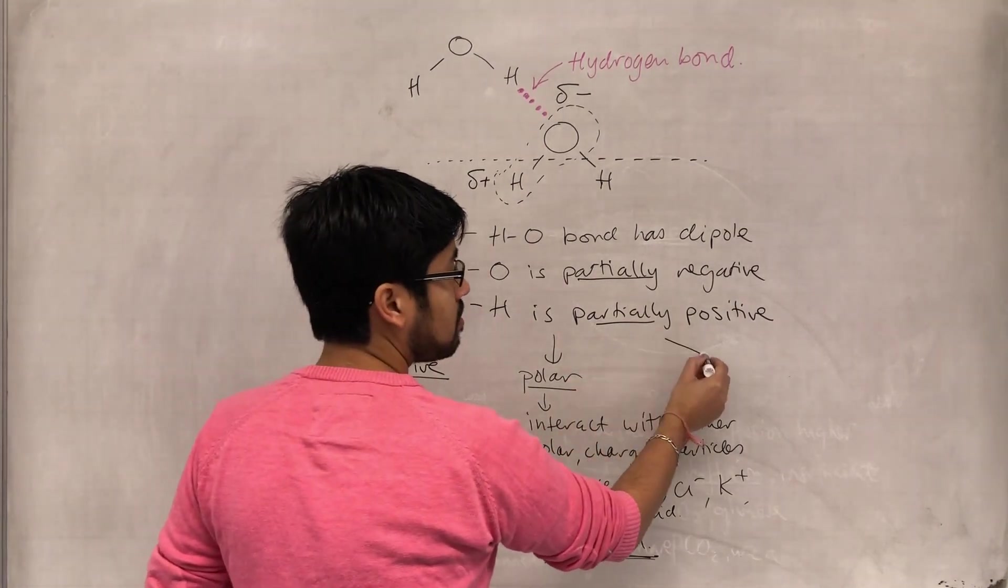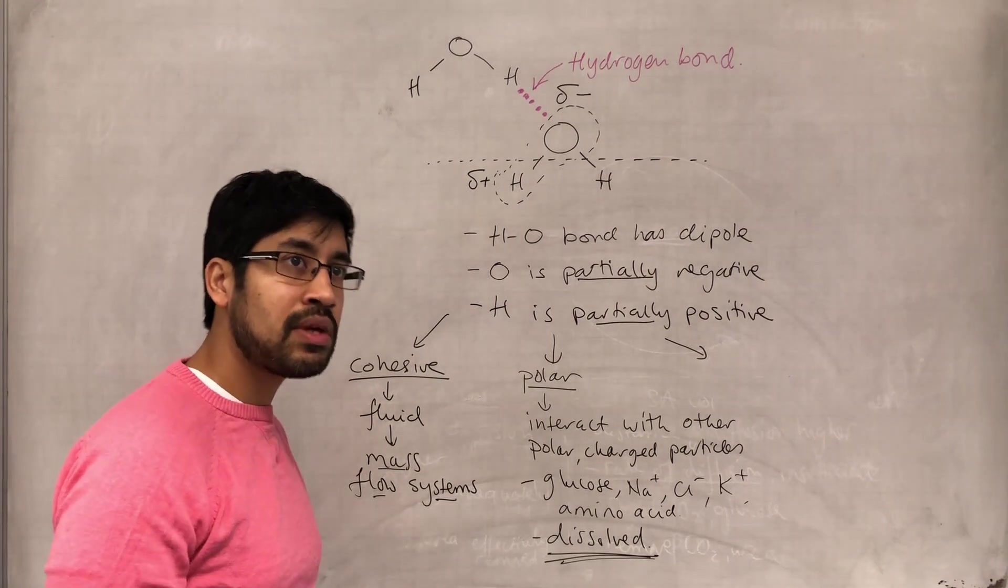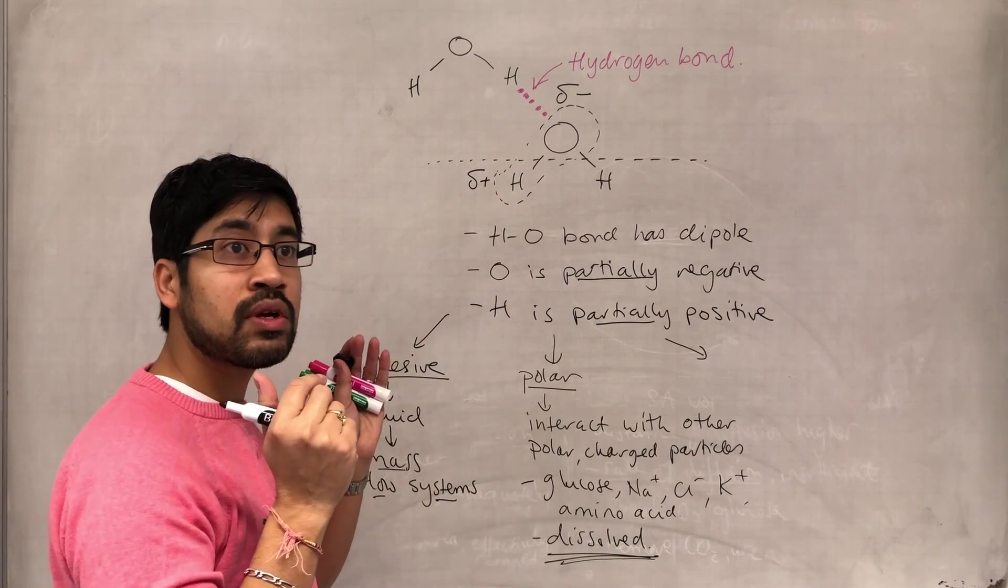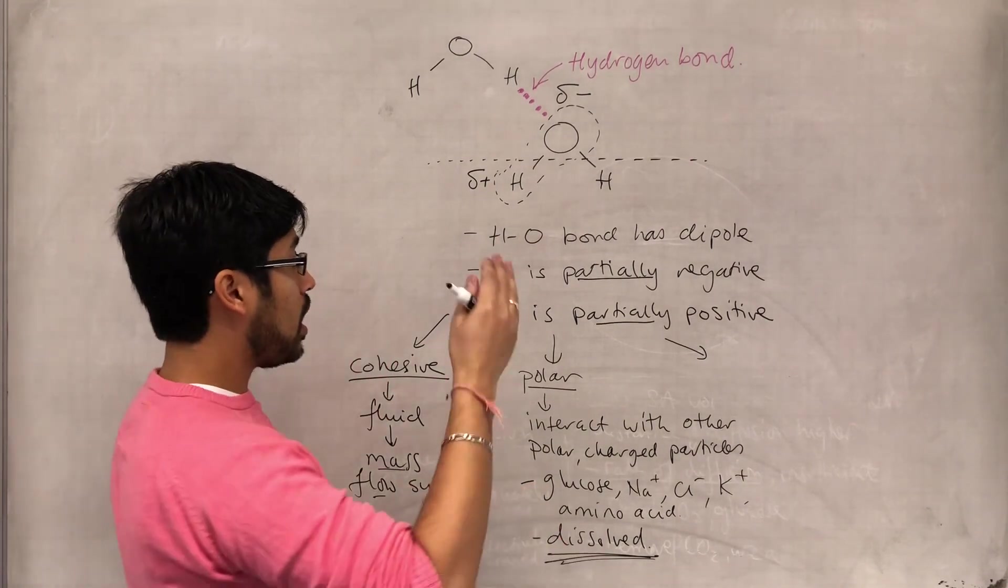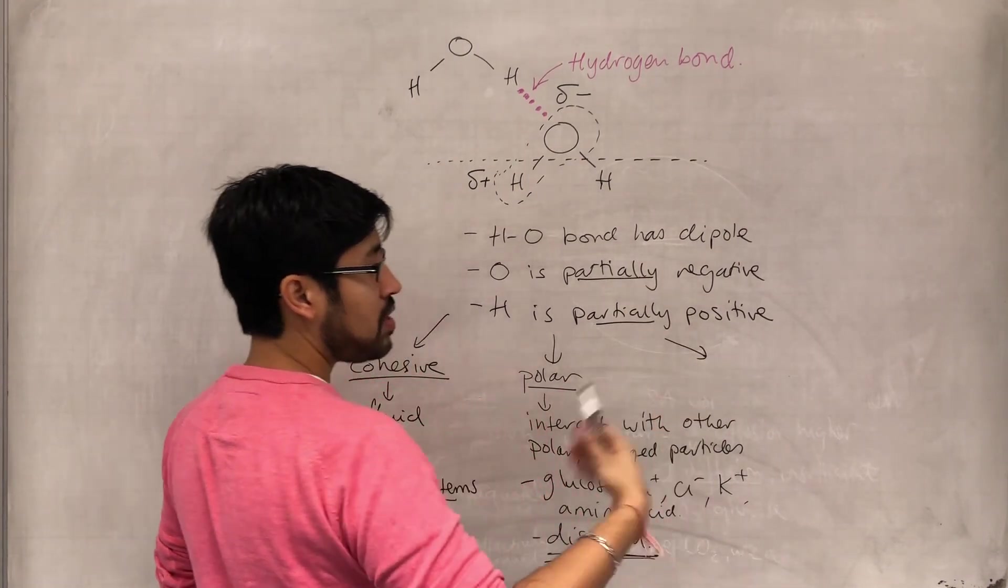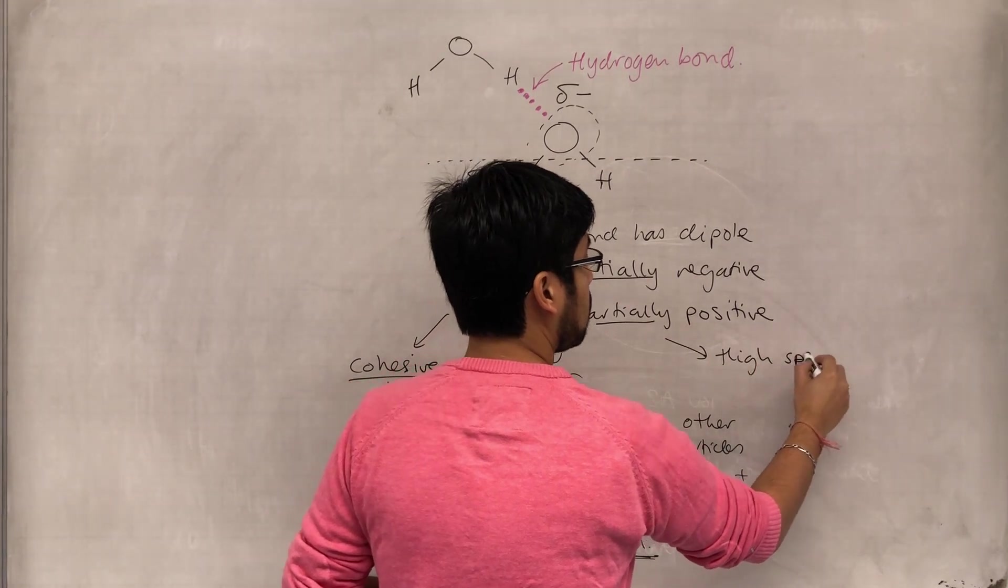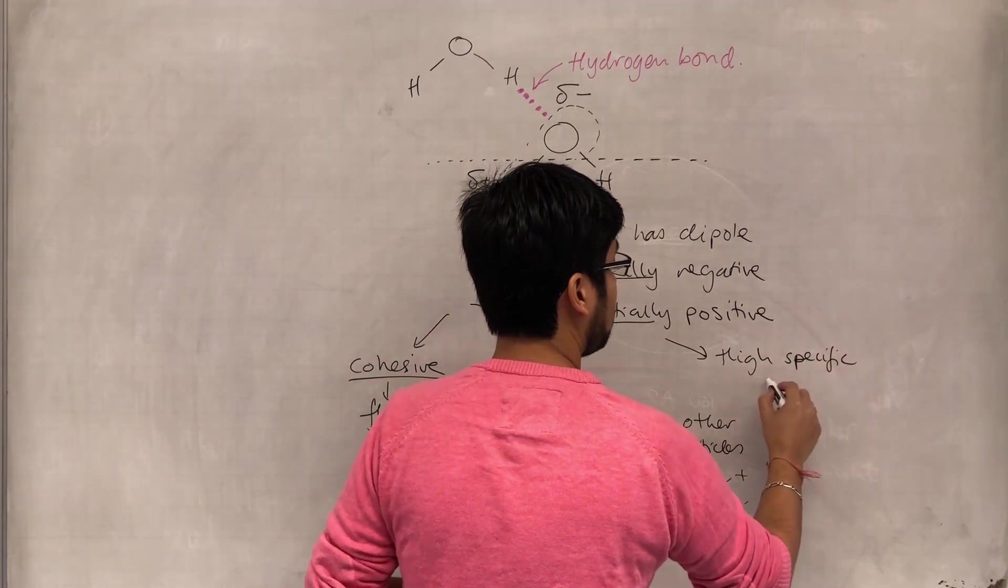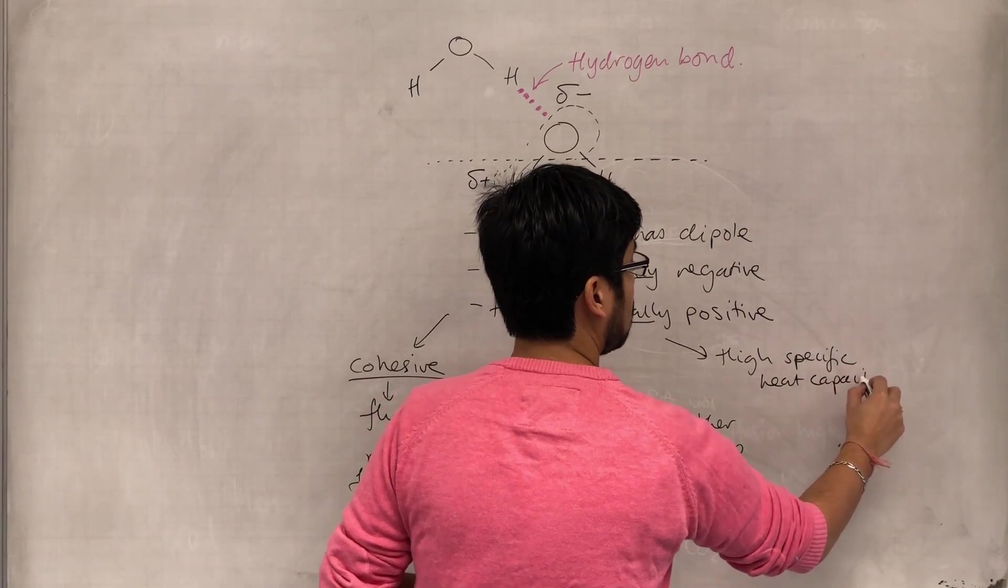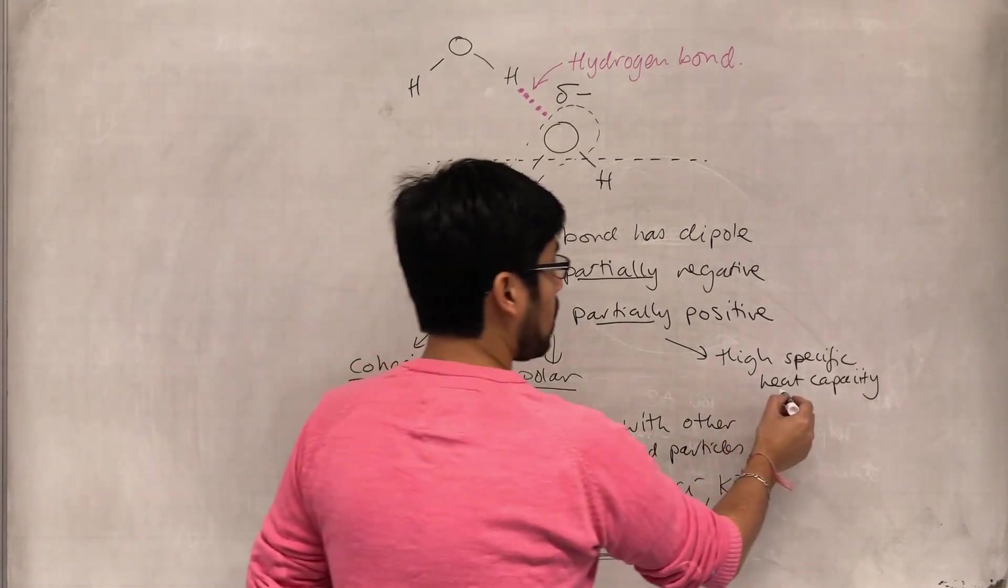And the other thing is that because water makes up so much of living organisms, it makes up so much of cells, and because living organisms are made of cells, it makes up so much of the resulting organism. Because of that, it has this other extra advantage of having a high specific heat capacity.